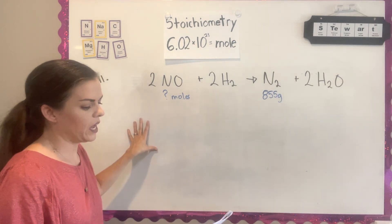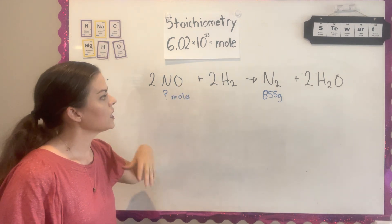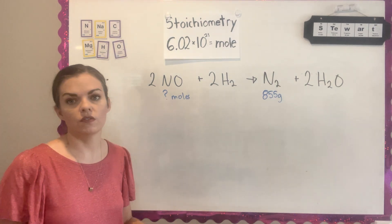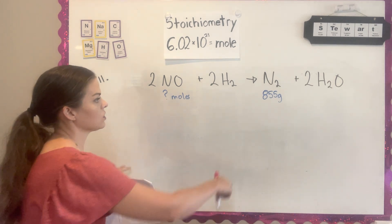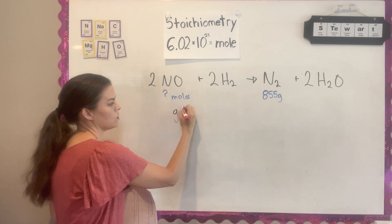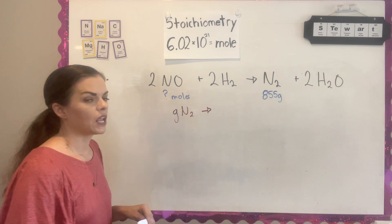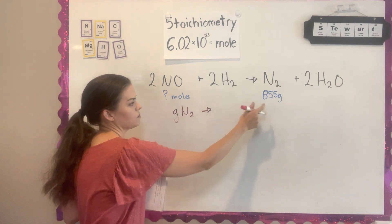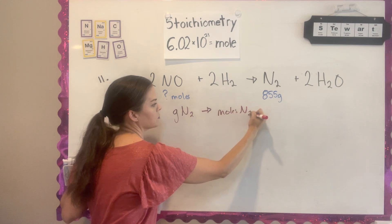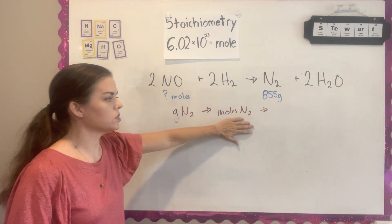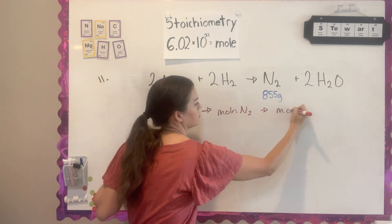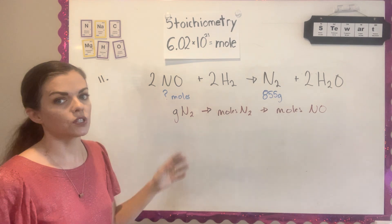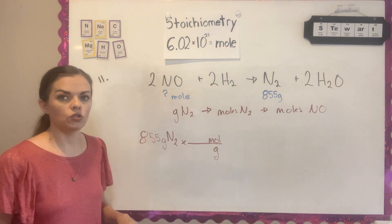Question 11 is very similar. We have nitrogen monoxide being converted to nitrogen gas and water. The question asks how many moles of NO I need to start with to produce 855 grams of N2. The path to take: start with grams of N2 since that's what they gave you, but since information is given in grams, first convert to moles. So I'll convert 855 grams of N2 to moles of N2, then go from moles of N2 to moles of NO.